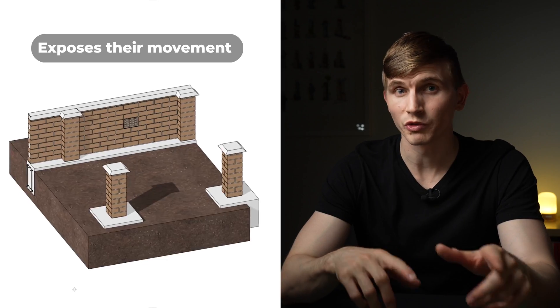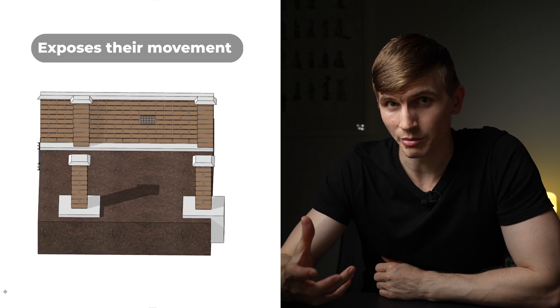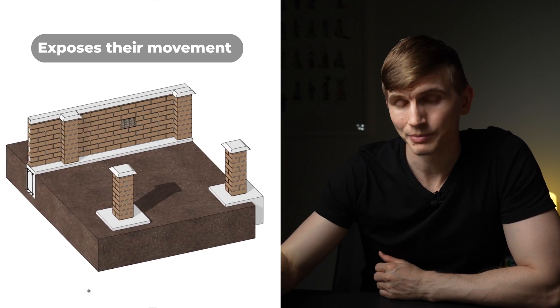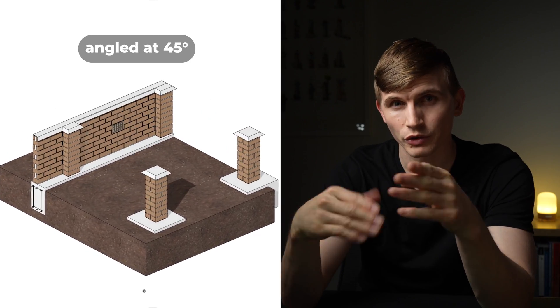Next up is termite capping. Termite capping is like a shaped metal shield that's installed to delay and expose the movements of termites from the soil to the timber parts of the building. Caps extend on all sides and are usually turned down at a 45 degree angle.